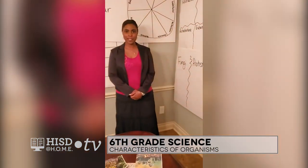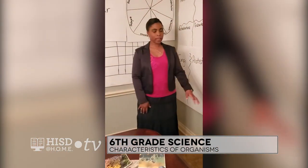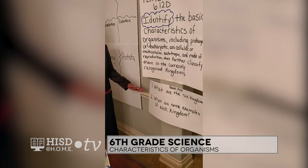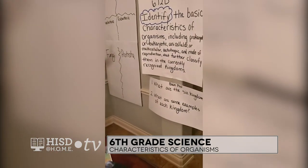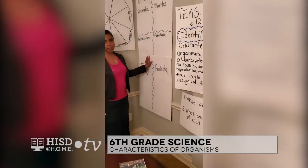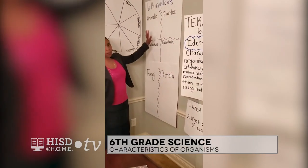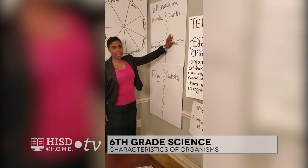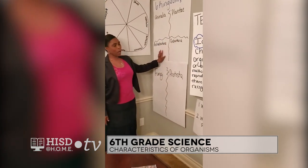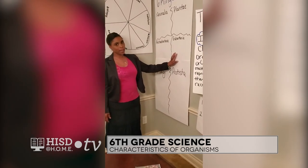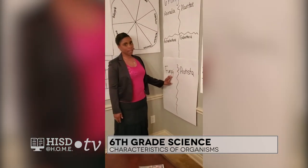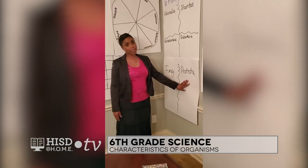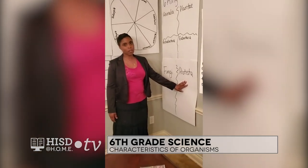Now we just got through watching our video, and we're going to look at the first question: what are the six kingdoms? I've made a chart which you can make as well. Our first one — animalia, plantae, archaebacteria, eubacteria, fungi, and protista. So those are our six kingdoms that we discussed and you saw in the video.